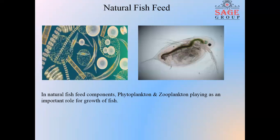Natural fish feed. Generally, different types of foods are produced naturally in ponds or reservoirs — these are called natural foods. They are very small and their movement depends on the direction of the water current. They are known as planktons.